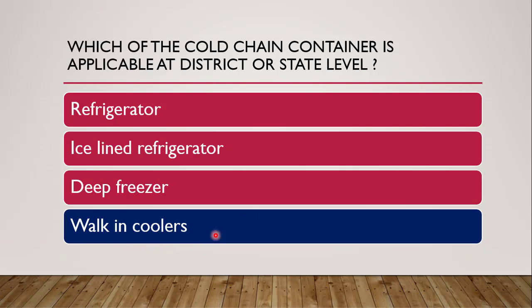The correct answer is walk-in cooler, because at district and state level the demand is very high. Walk-in coolers are a type of cold chain container with the desired temperature maintained in a very big double-walled room. There is a very big room which is constructed and maintained at the desired temperature, and a person can enter — only two persons can enter at a time. It stores vaccines for the whole district or state level, for three months or even more.